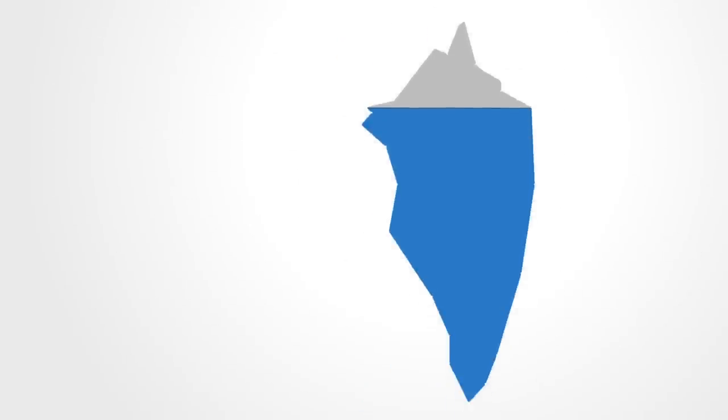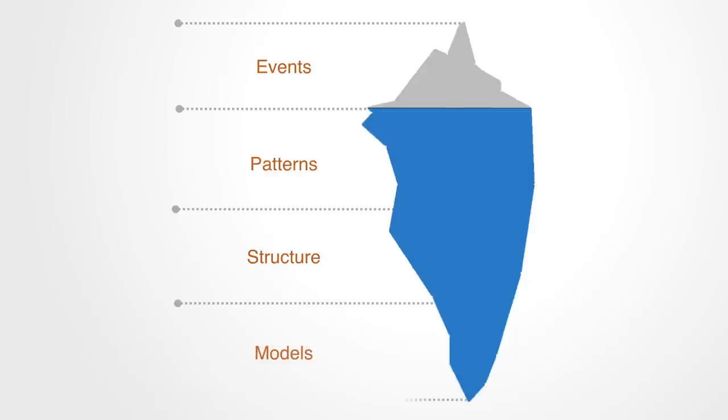The iceberg model typically identifies four basic levels to situations. Events, which represent the manifest components and actions observable to us. The patterns of behavior beneath this describe trends over time. System structure describes how the parts are interrelated to influence the patterns. Finally, the mental models that support everything else in the system through a set of beliefs, values, and assumptions shaping people's perception.